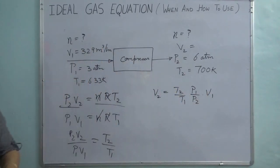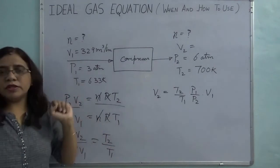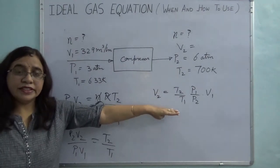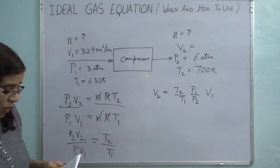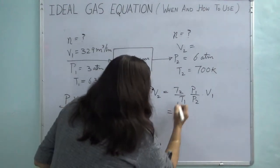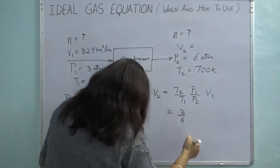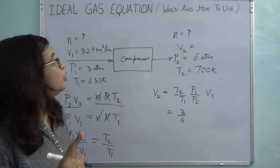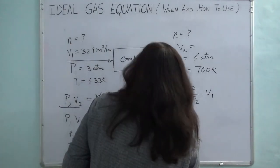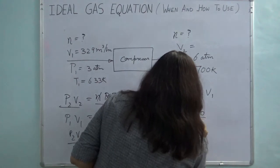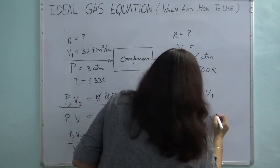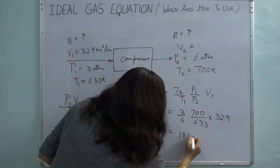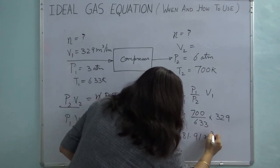Substituting values — again using Kelvin temperatures: T2/T1 = 700/633, P1/P2 = 3/6, V1 = 329 m³/hr. Performing the calculation gives V2 approximately equal to 181.91 m³/hr. In a single step, without needing R or calculating N separately, we obtained the outlet volumetric flow rate.